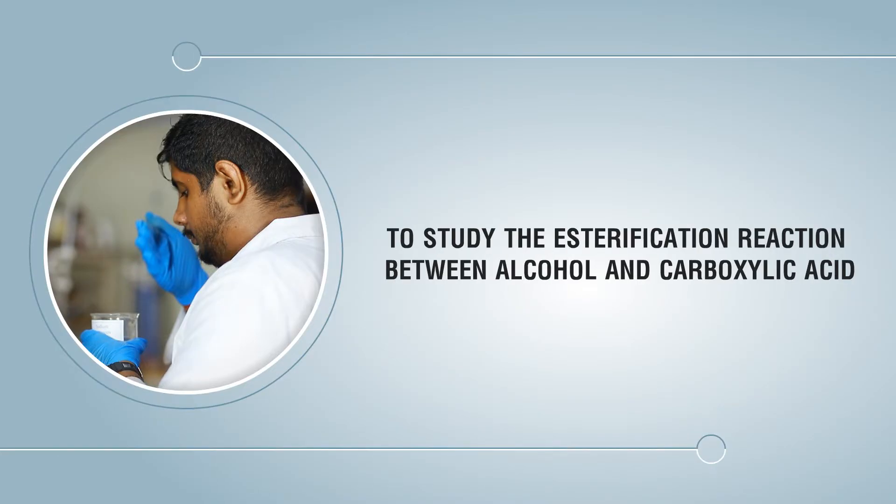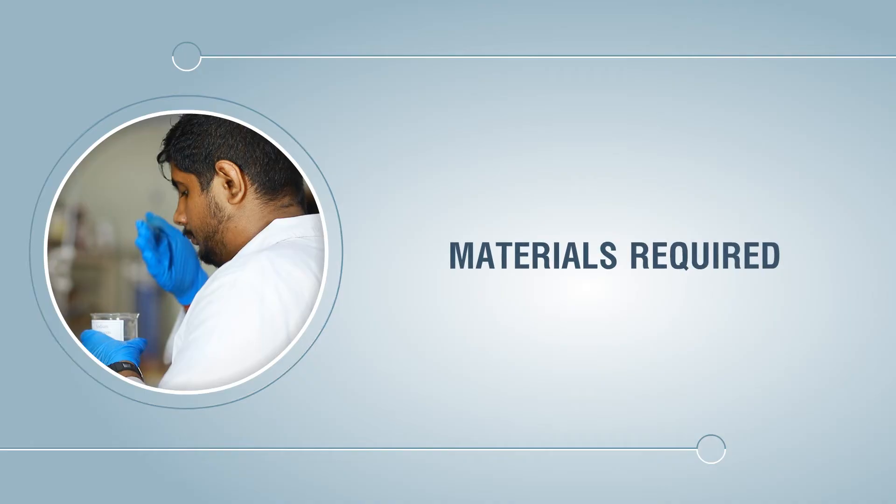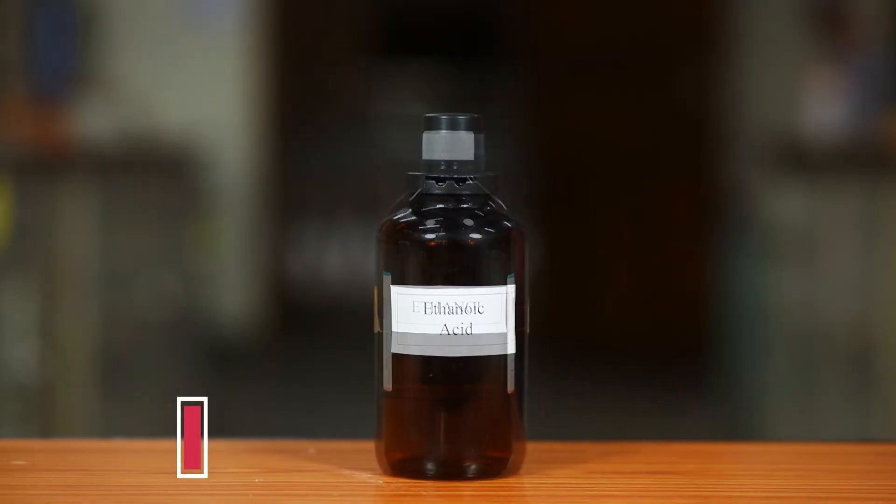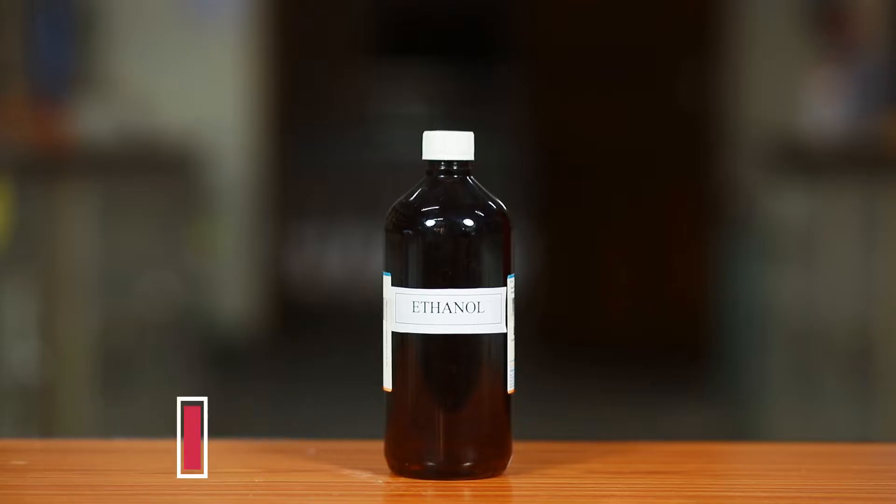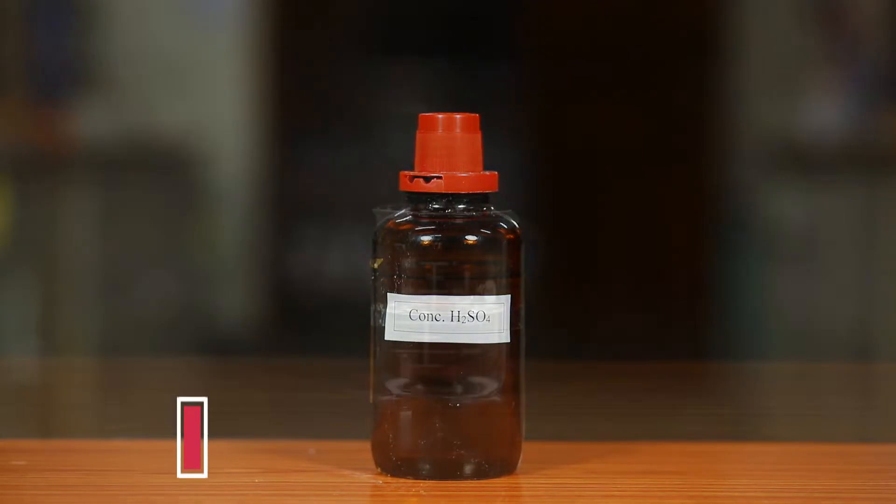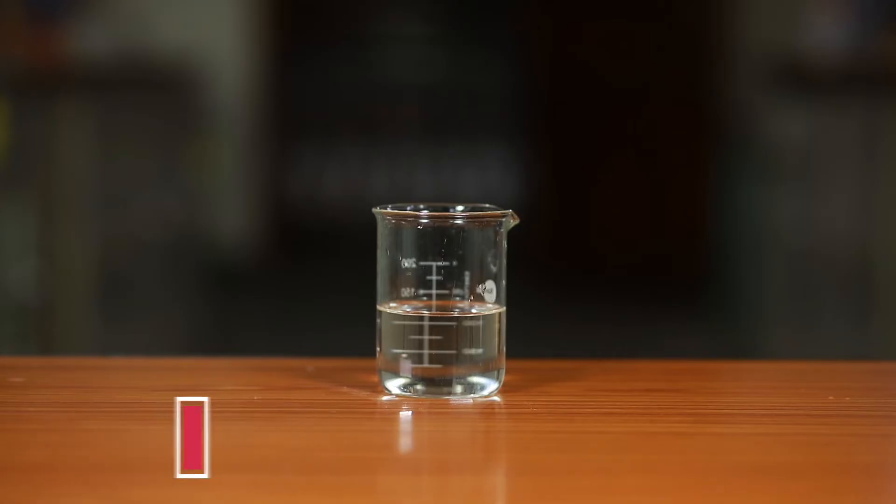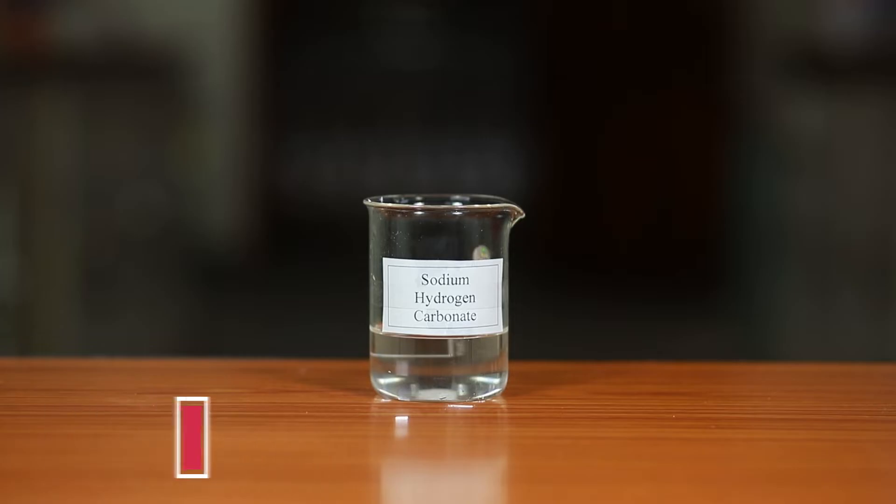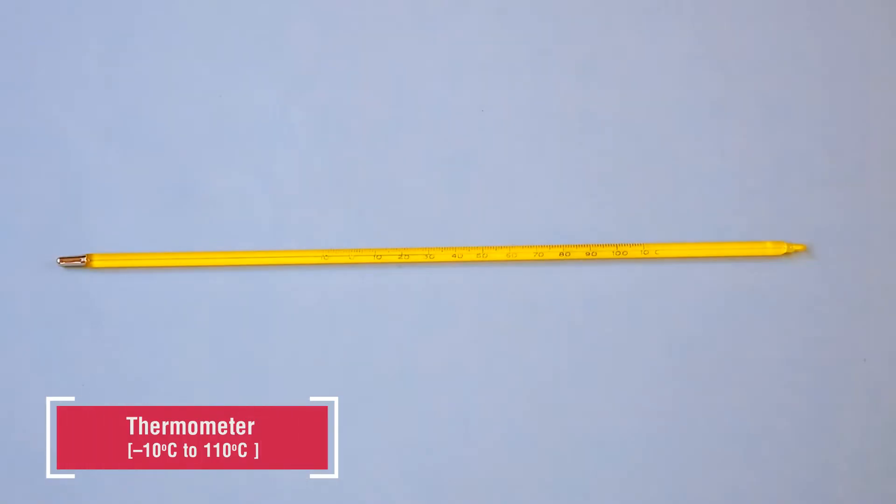To study the esterification reaction between alcohol and carboxylic acid. Materials required: 3 ml ethanoic acid, 3 ml ethanol, few drops of concentrated H2SO4, distilled water, 100 ml sodium hydrogen carbonate solution, and a thermometer (−10°C to 110°C).